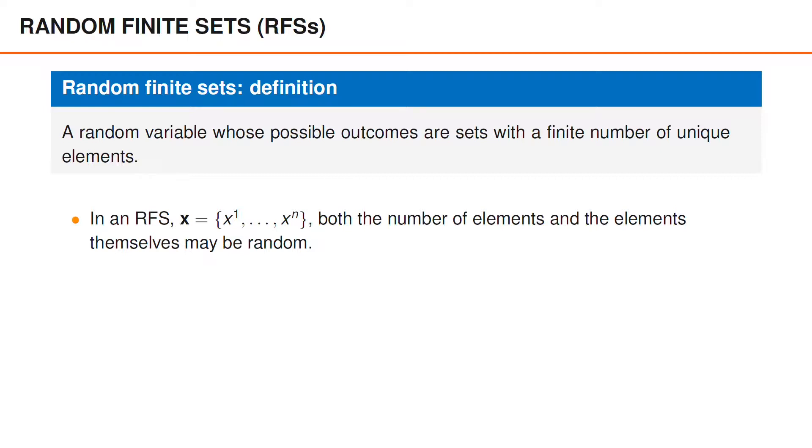Note that the measurement matrices also had a similar property in the earlier parts of this course. By the way, we normally use superscripts to index elements of a set, and subscripts when we refer to time. To describe this slightly more formally, the elements of the random finite sets are assumed to belong to some space that we denote D, where D is usually a Euclidean space of some dimension, which means that the elements are just vectors.